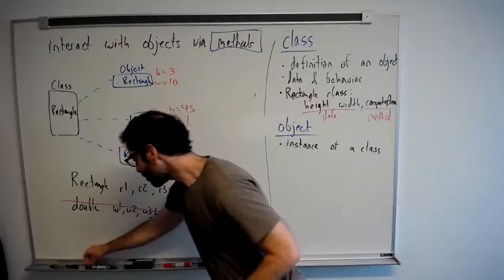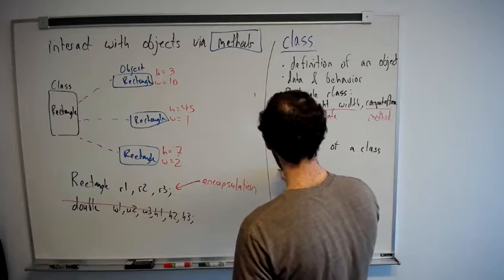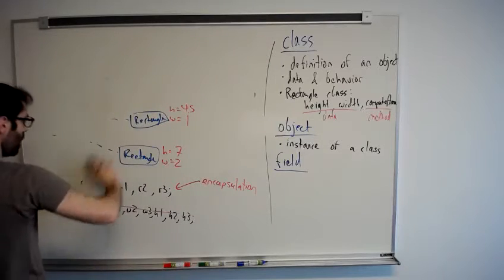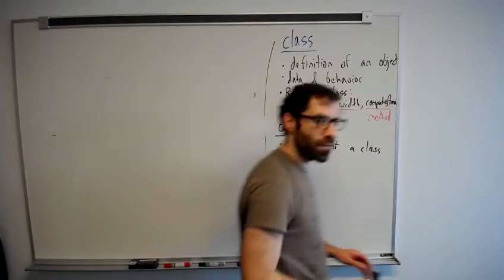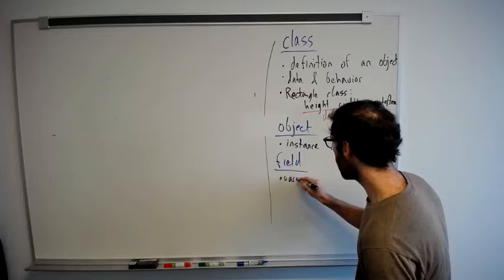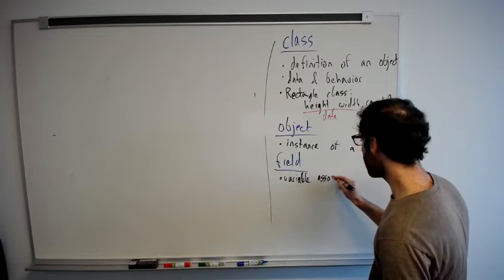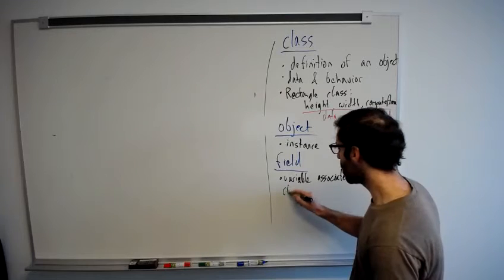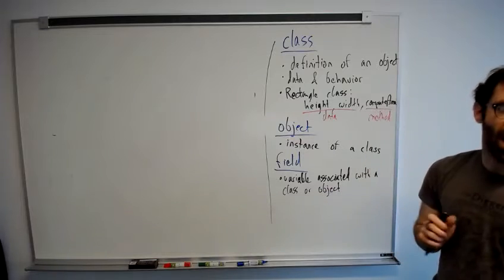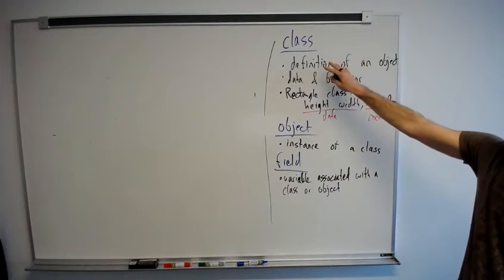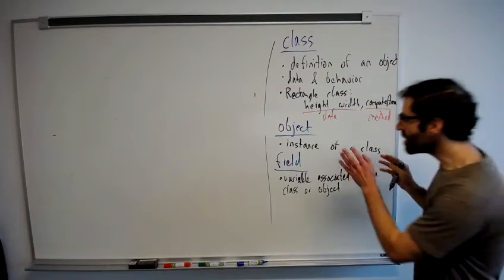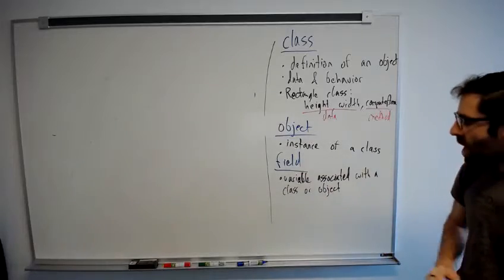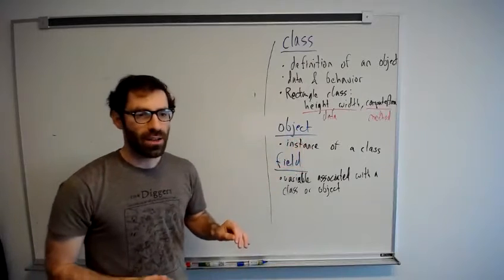Other important terms: we have field. A field is a variable associated with a class or object. And this class definition defines which fields instances of that class have. Like other variables in Java, fields are declared to have a certain type.